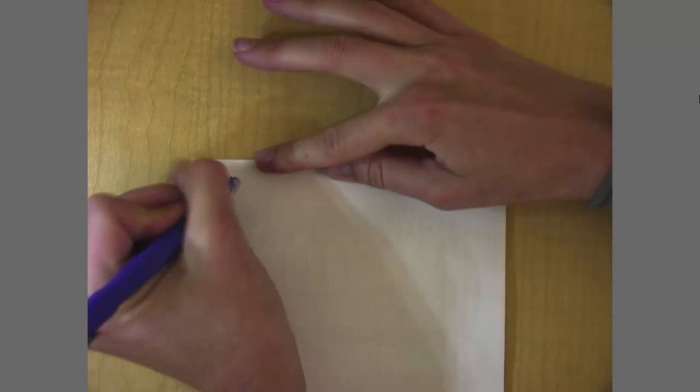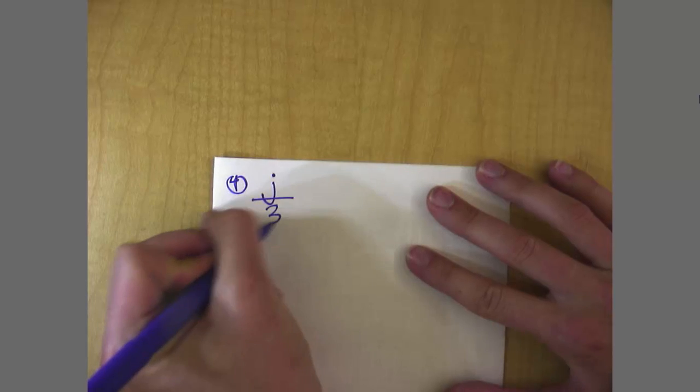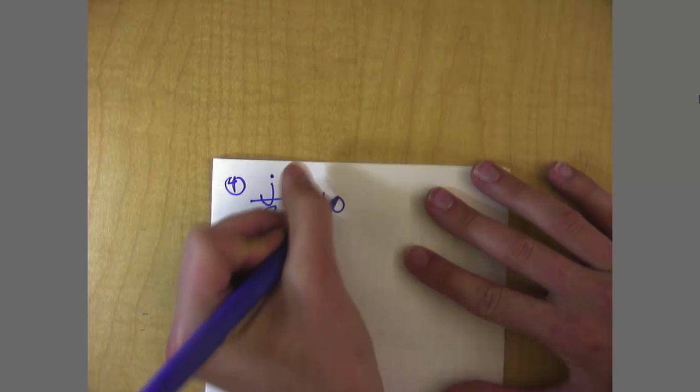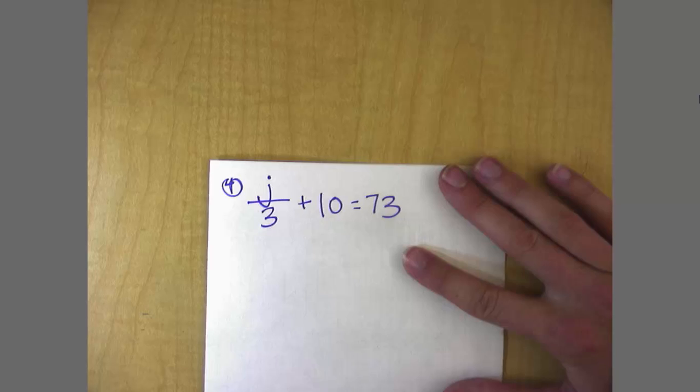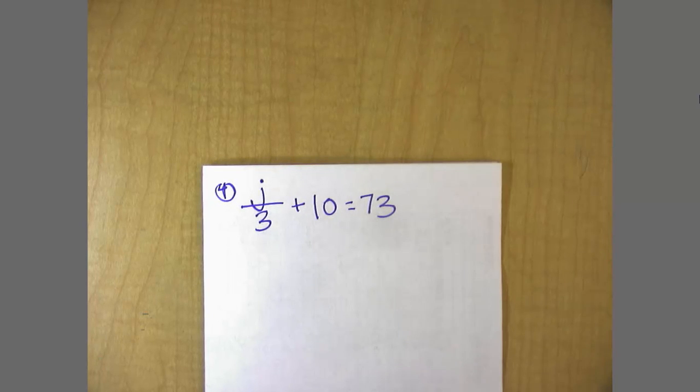Last one that we're going to look at is j divided by 3 plus 10 is equal to 73. Do you want to do this one on your own? Okay.